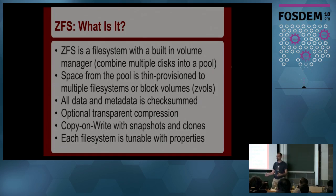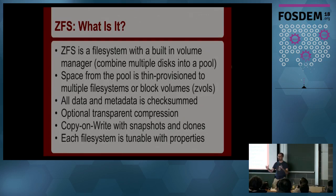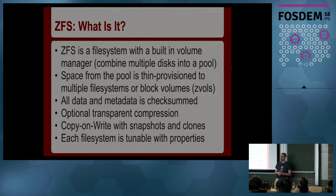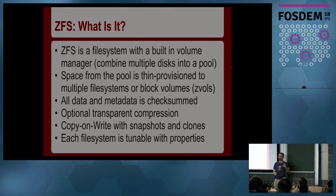ZFS solves the partitioning problem. Instead of slicing your hard drive into a bunch of file systems and deciding upfront how big /var or home directories will be, it takes the pooled approach — all storage in one big pool with many file systems that take space as needed. You can create reservations to ensure your log file system doesn't run out of space, or quotas to stop a dataset from using more than a set amount. This eliminates free space fragmentation where you have 50 gigs free in one partition and 50 gigs in another but a 70-gig VM image with nowhere to put it.